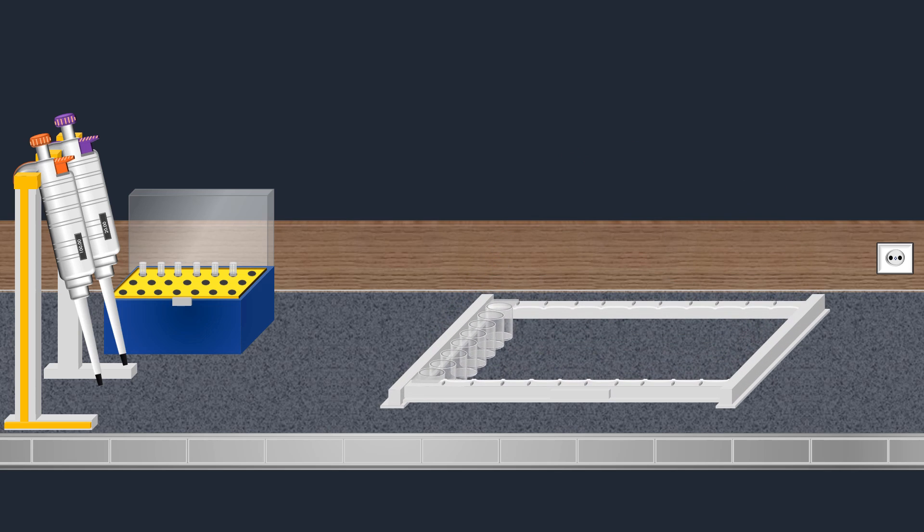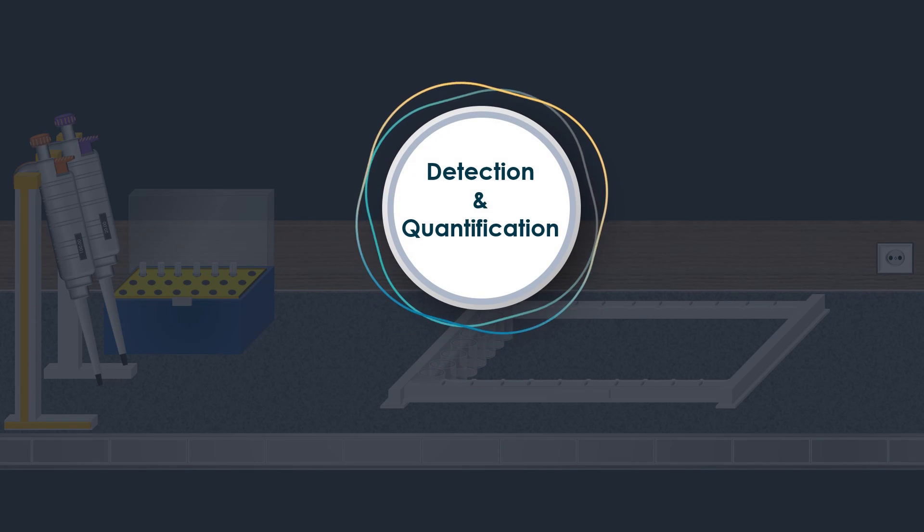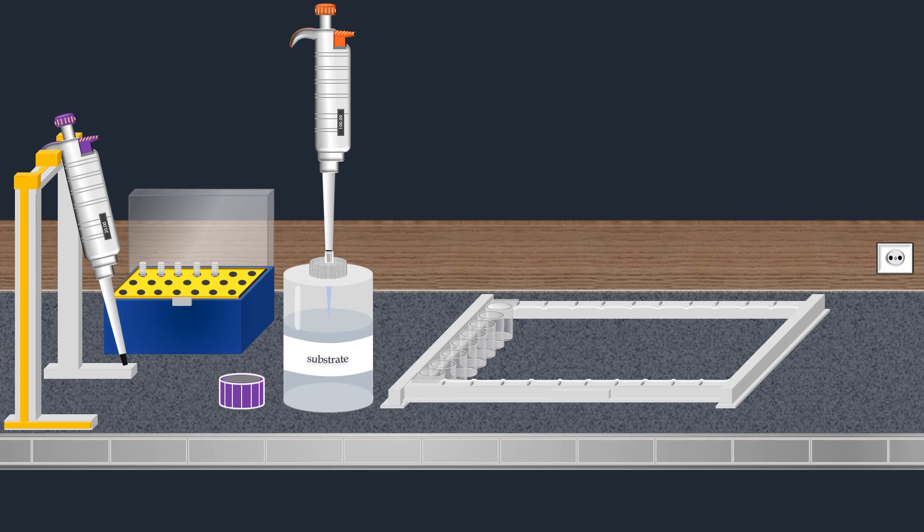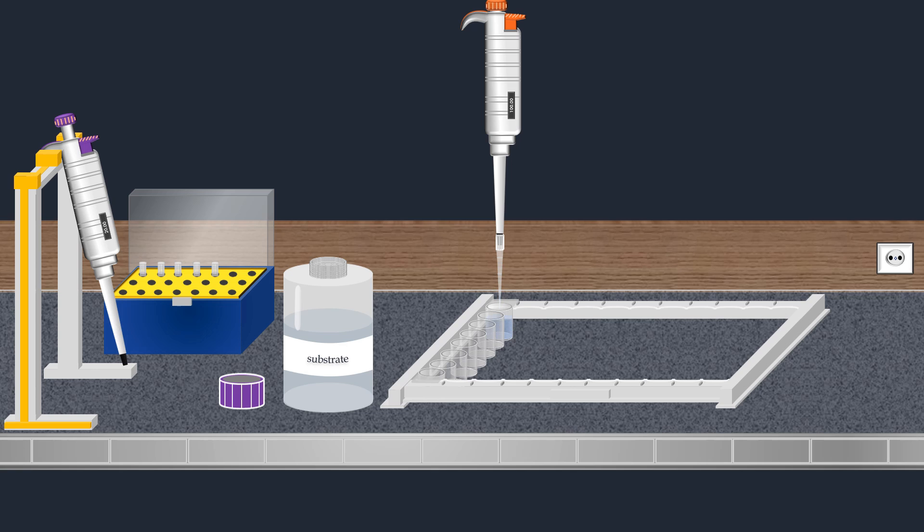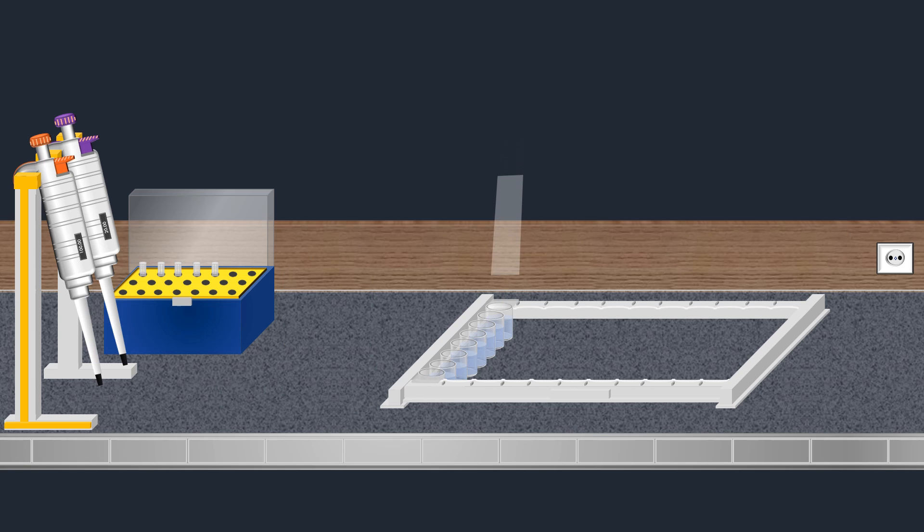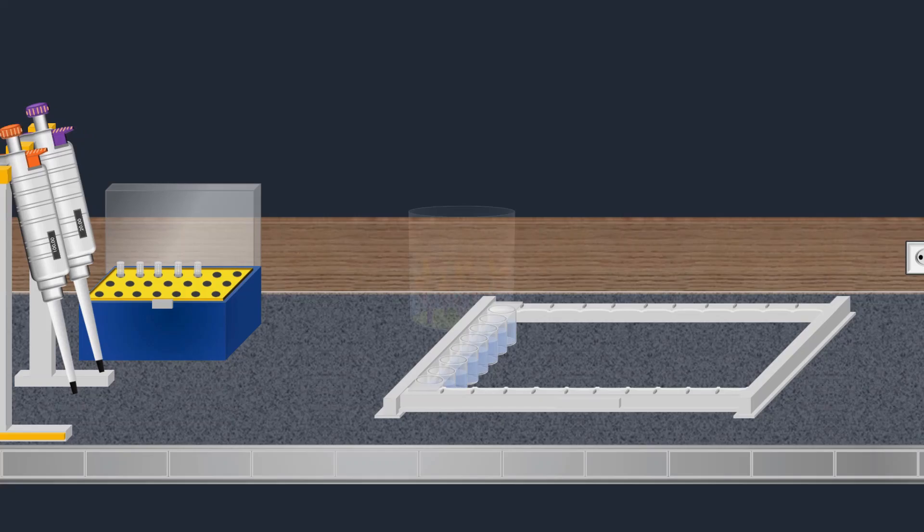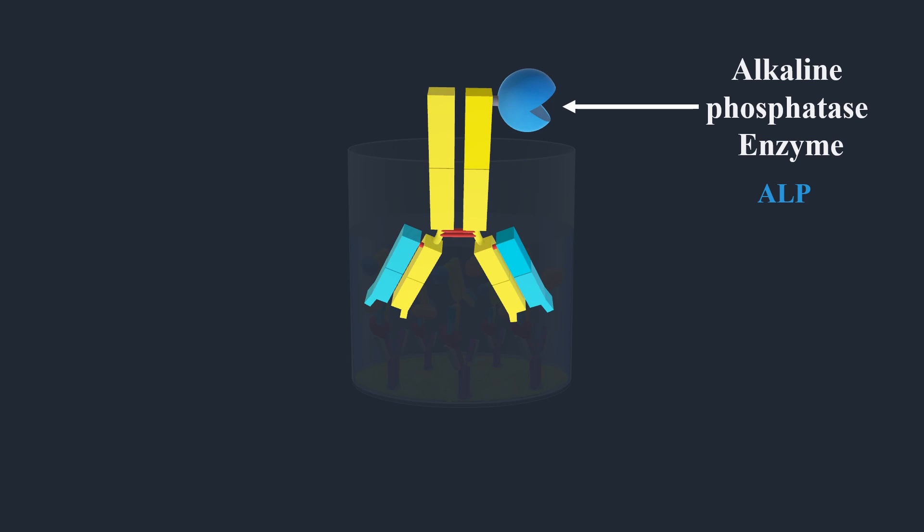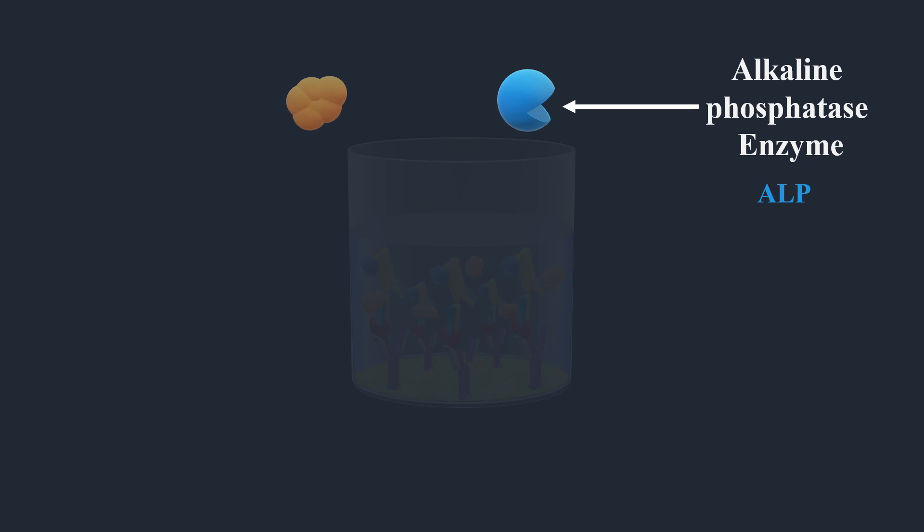Following the final wash, the next critical step involves detection and quantification. This is achieved using a substrate that initiates a reaction, producing a detectable signal. The substrate solution is carefully added to each well. Then the well strip is covered and incubated. The detection antibody is typically labeled with an enzyme, such as alkaline phosphatase. The most common chromogenic substrate for this enzyme is P-nitrophenyl phosphate, PNPP.